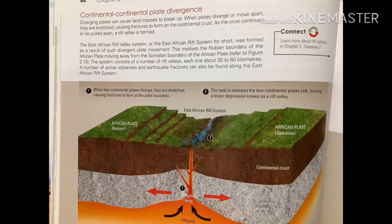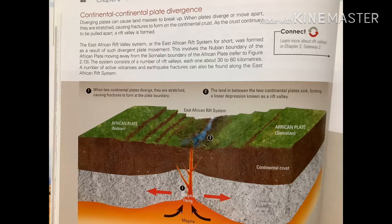A similar thing can happen to continental plates. If your continental plate is being pulled apart — as in the case of the African plate, where the Somalian side and the Nubian side are moving apart due to fracturing in the crust and magma rising up — you will form a rift valley in the middle. The Great African Rift Valley system is one area where continental-continental plate divergence occurs.